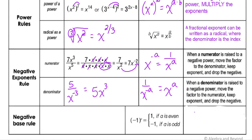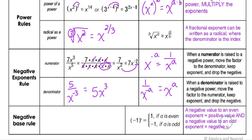The last rule is the negative base rule. If a negative value is raised to an even exponent, we get a positive value. If a negative value is raised to an odd exponent, the answer is negative. For example, negative 5 to an even power is positive, because negative times negative an even number of times gives a positive answer; but negative 5 to an odd exponent gives a negative answer.